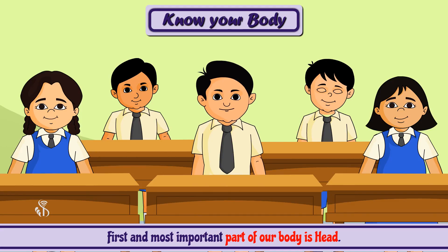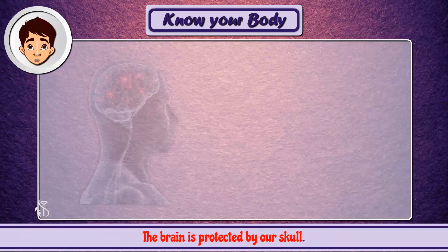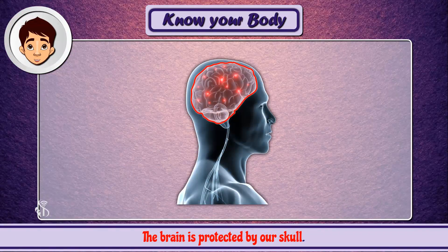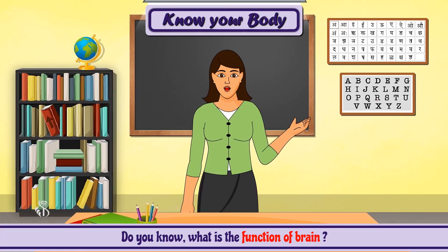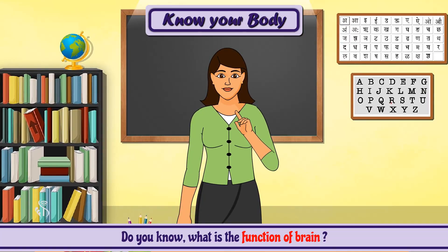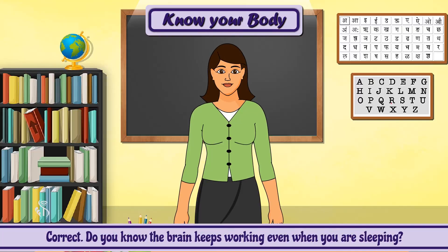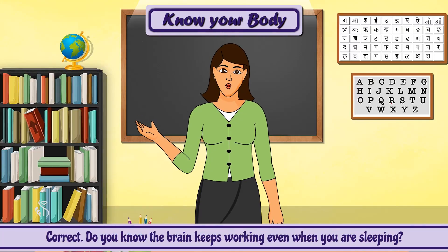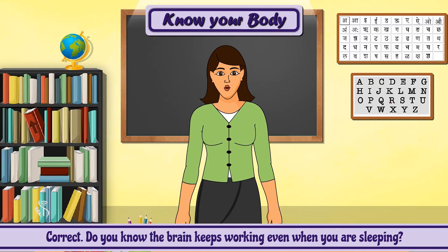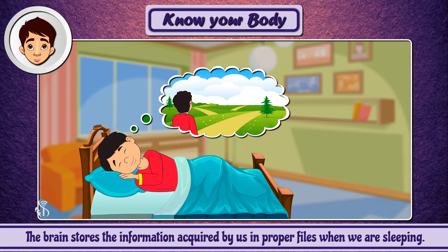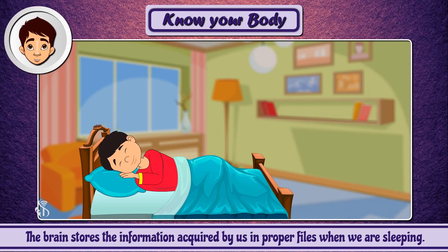First and most important part of our body is the head. The brain is protected by our skull. Do you know what is the function of the brain? The brain gives instructions to different parts of our body. Did you know the brain keeps working even when you are sleeping? The brain stores the information acquired by us in proper files when we are sleeping.